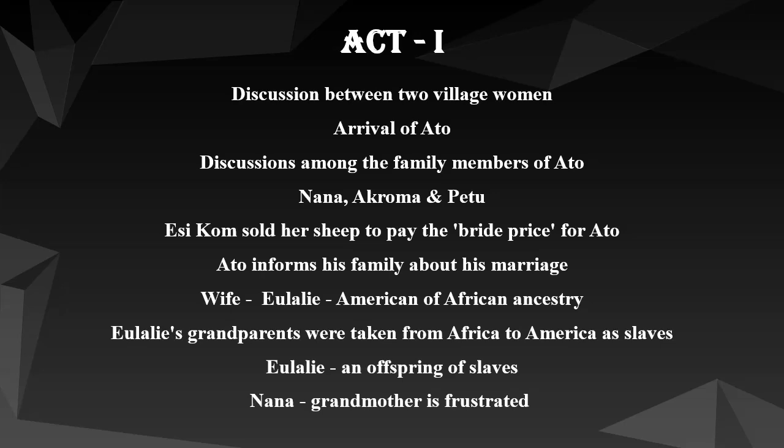The play consists of five acts. In Act 1, it features two village women returning from the river with their water pots, discussing how they toiled like slaves during domestic and farm work while other family members are resting. They also talk about the arrival of Ato, who is expected to pay the debts his mother had.